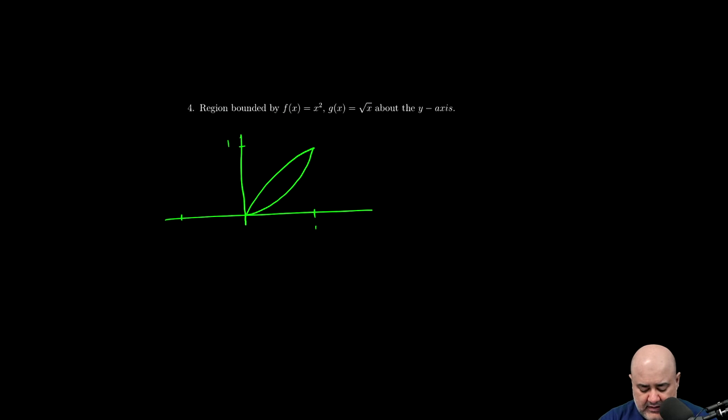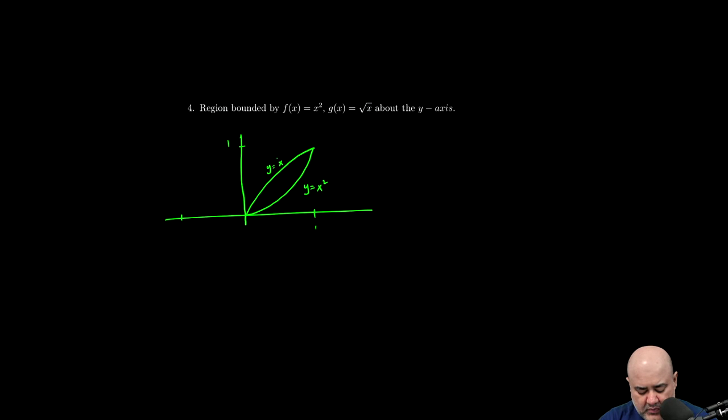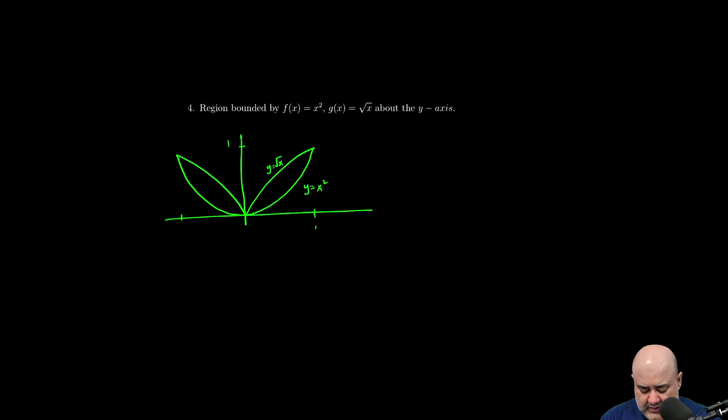So this is my region. I need to label my functions, y equals x squared. This one is y equals root x. And then if I were to reflect it about the y-axis, it's going to look like so. And like so.